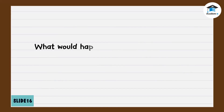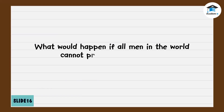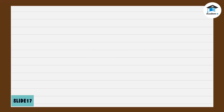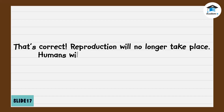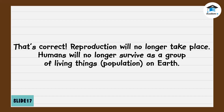What would happen if all men in the world cannot produce sperm cells? That's correct — reproduction will no longer take place. Humans will no longer survive as a group of living things, and the population on Earth would decline.